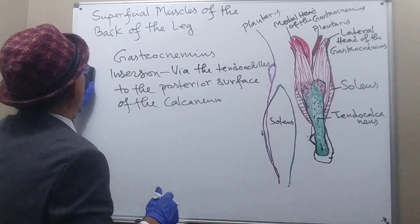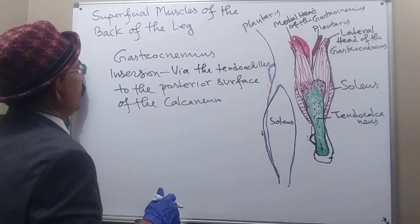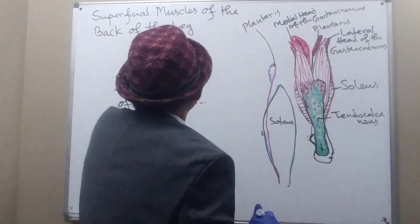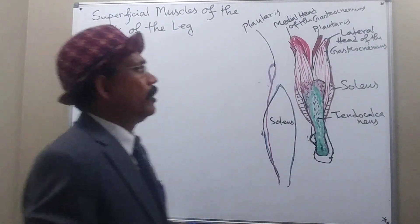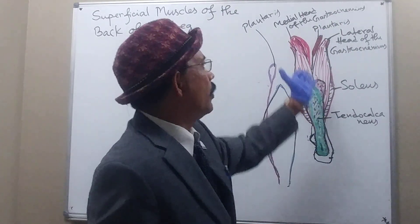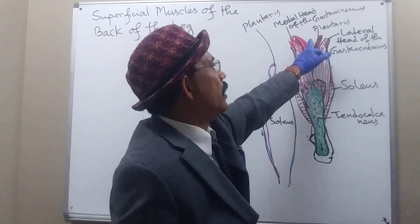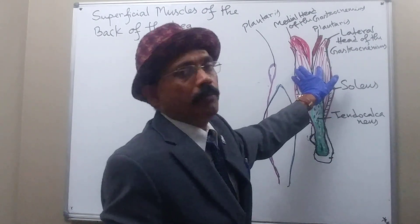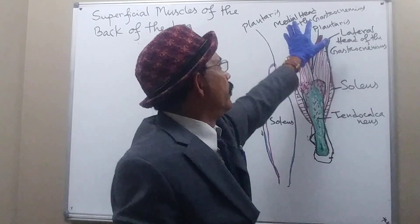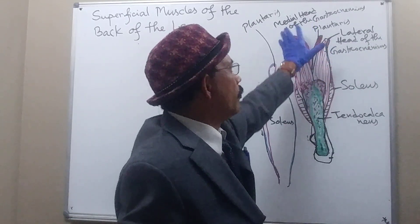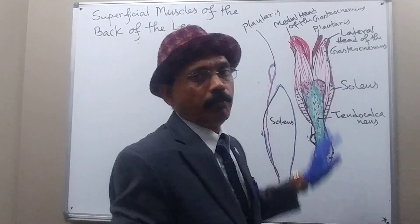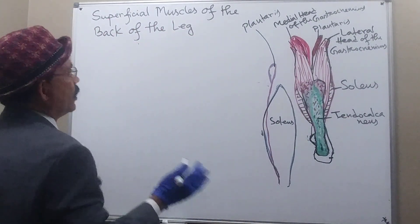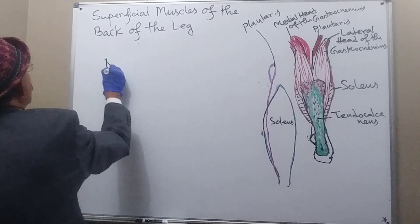We have covered the origin and insertion of the gastrocnemius muscle. Now, blood supply: the gastrocnemius receives blood supply from the popliteal artery, the genicular artery, and the posterior tibial artery.